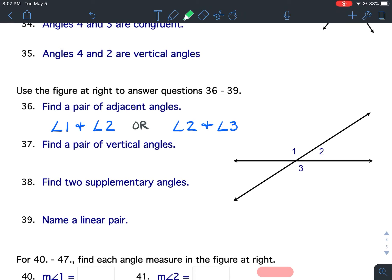For 38, you're finding two supplementary angles. Remember, supplementary means they add up to 180. So for 38, you are finding a pair of supplementary angles. You're finding two angles that are supplementary.